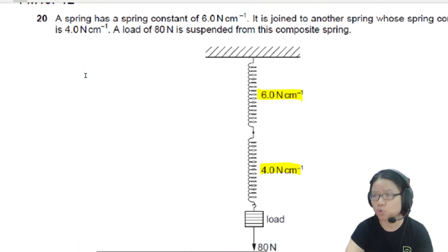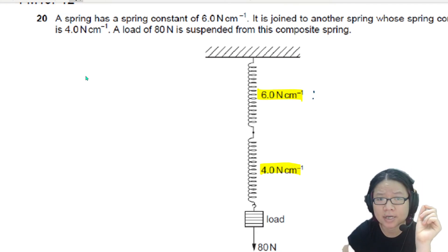So in case you don't know, whenever you see this 6 N per cm, what this 6 N per cm is trying to tell you is 6 N force extends spring by 1 cm.